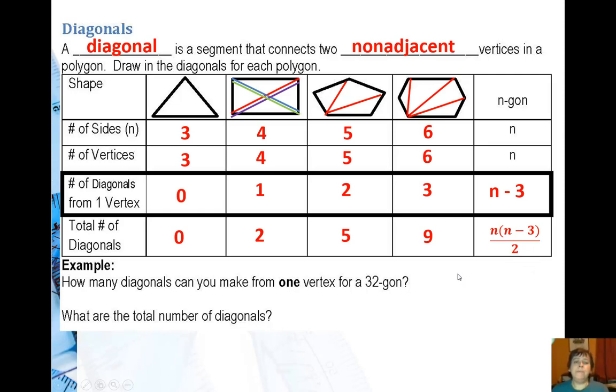So in our example we're going to look at how many diagonals you can make from one vertex of a thirty-two gon. So I'm going to do n minus three which would be thirty-two minus three or twenty-nine diagonals. Good thing I'm not making you draw that.